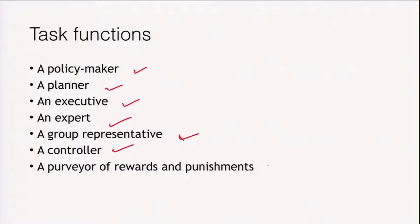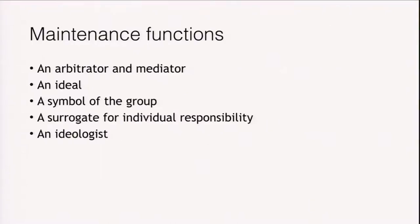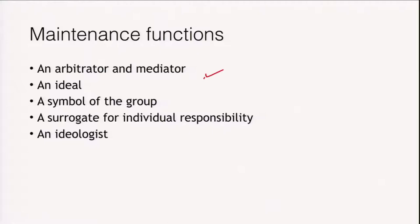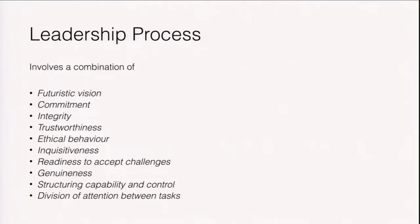In addition to task functions, there are maintenance functions. The maintenance functions involve the leader being an arbitrator and mediator, an ideal, a symbol of the group, a surrogate of individual responsibility, an ideologist, and more. Putting together several processes involved in leadership, we can say the leadership process involves a combination of futuristic vision, commitment, integrity, trustworthiness, ethical behavior, inquisitiveness, readiness to accept challenges, genuineness, structuring capability and control, and division of attention between tasks rather than attending to any one task alone.